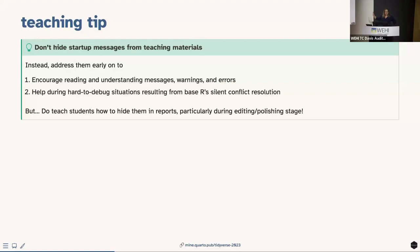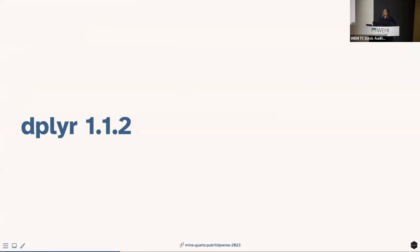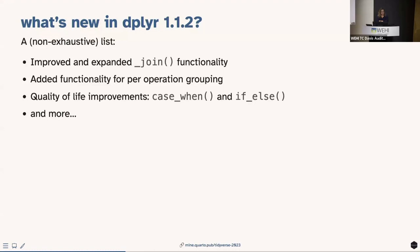dplyr got many updates over the last year. I'll cover a few that cross my path almost daily: improved and expanded join functionality, added functionality for per-operation grouping, and quality-of-life improvements to case_when() and if_else(). Case_when() happens to be my favorite dplyr function, which is why I'm highlighting it.